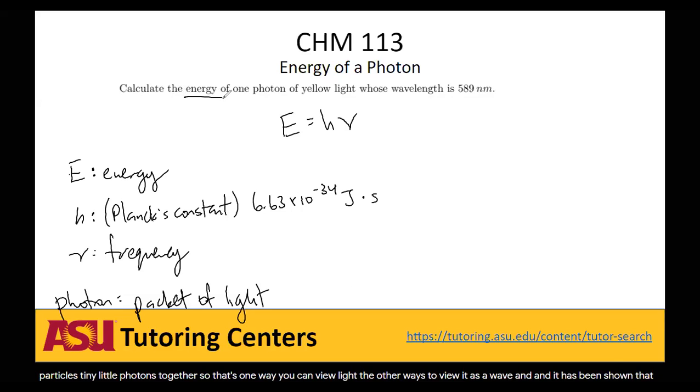So essentially, to calculate the energy of one photon, we're asking for the light energy. But the yellow light was given to us with a wavelength of 589 nanometers, just like the last problem. This equation requires frequency.